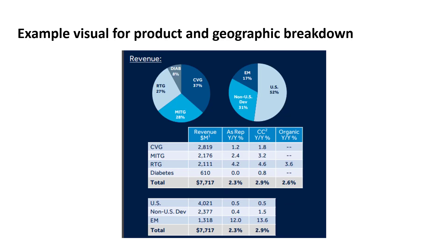I want to focus in on this particular portion of one of those visuals, where we see a breakdown by both product category as well as geography in two pie charts at the top. But then there's additional information in the tables down below. Whenever you have additional information that is not part of the chart, it makes it hard for the audience to connect those two. So instead, I'm going to suggest we create a bar chart that has all of the information — the breakdown of the segments visually, as well as the actual millions of dollars and the year-over-year change — all in one visual.